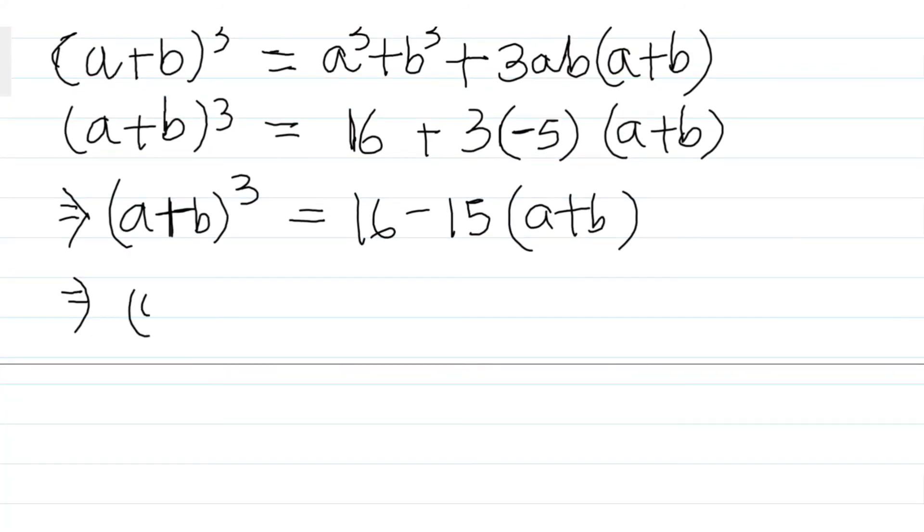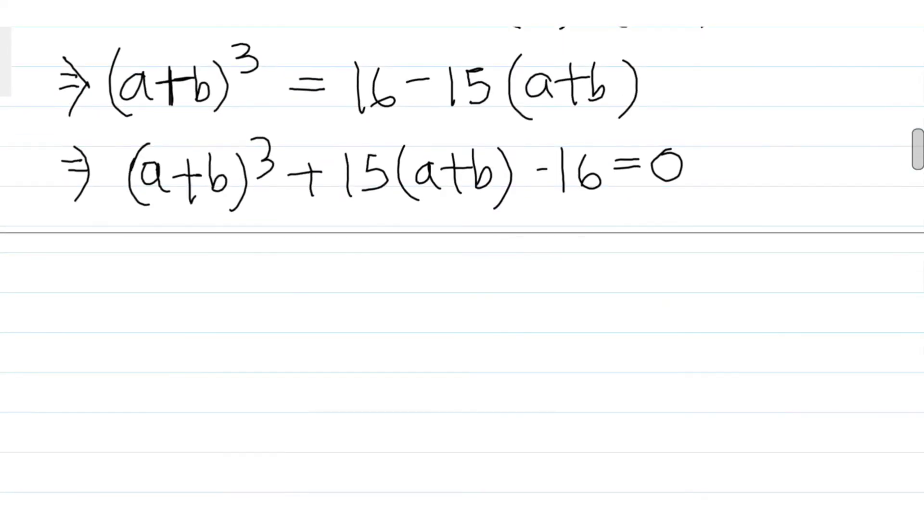(a+b)³ plus 15(a+b) minus 16 equals zero. Now suppose, let's assume a plus b equals x, then what happens? Our equation becomes x³ plus 15x minus 16 equals zero, and this is a cubic equation.